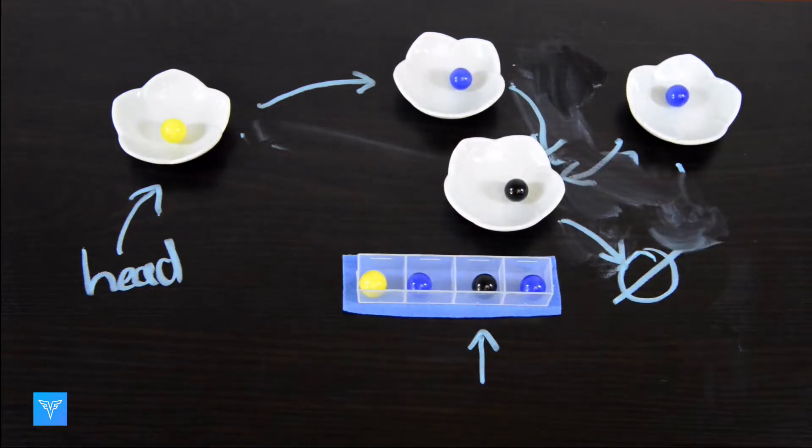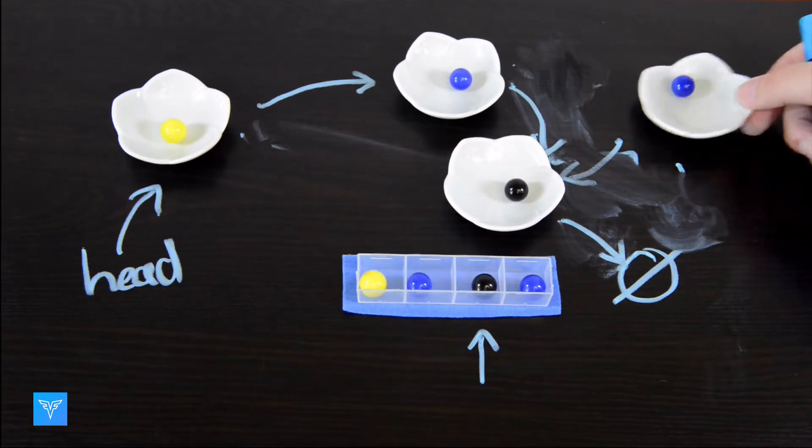Some programming languages will detect there is no way of accessing this node. Nothing points to it, even though something points away from it, and will delete the node for you. In other languages, you'll have to deallocate this memory yourself.